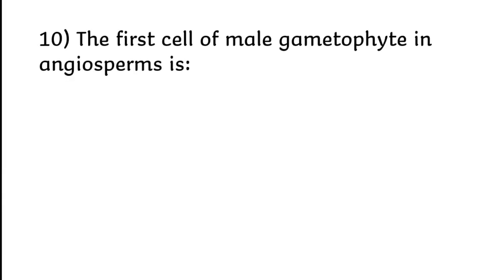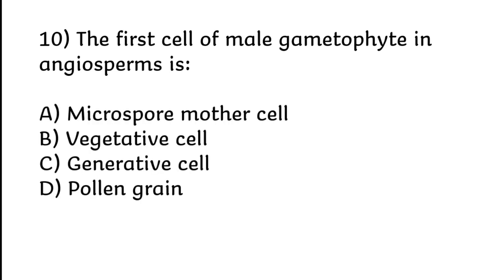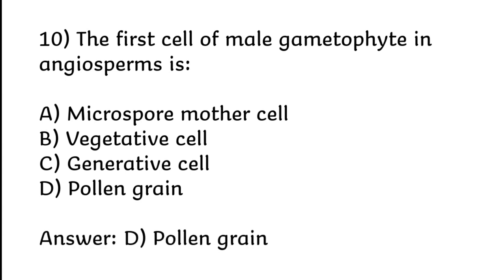The first cell of the male gametophyte in angiosperms is: A) Microspore mother cell, B) Vegetative cell, C) Generative cell, D) Pollen grain. Correct answer is option D: Pollen grain.